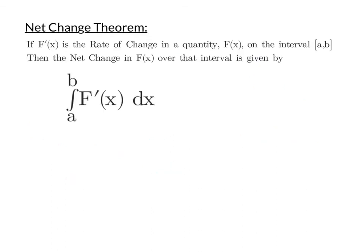The second idea I want to talk about is net change and the net change theorem. It says that if f prime is a rate of change in a quantity f on the interval from a to b, then the net change in f over that interval is given by the definite integral of f prime. Which, when we kind of start playing with this, it should make sense because the definite integral of f prime is going to be that original function f evaluated from a to b, which would be big f at b minus big f at a.